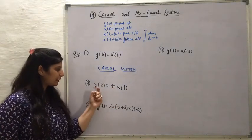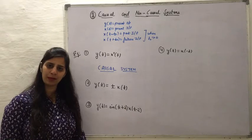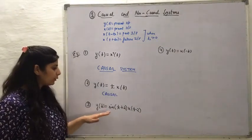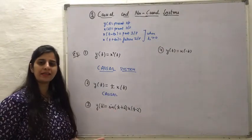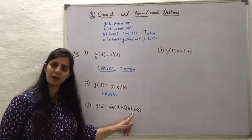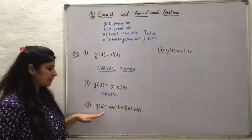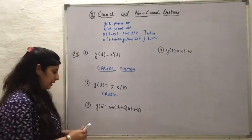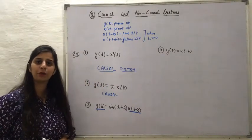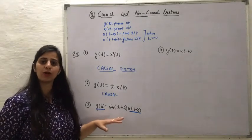Since the present output depends upon the present input, y(t) = t · x(t) also comes under the category of causal system. In the third example, the delayed value of the input signal — that is, the past value — is multiplied with sin(t + 2) to produce the present output. Since the output is related only to the past value of the input, this kind of system is also a causal system.